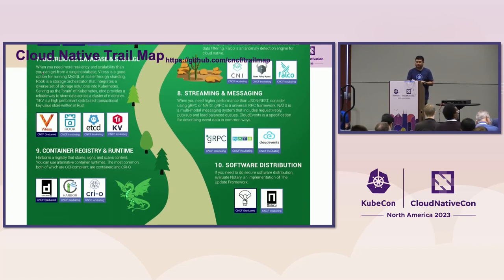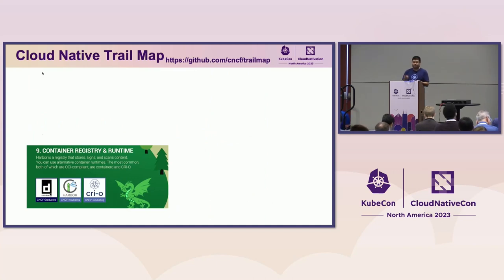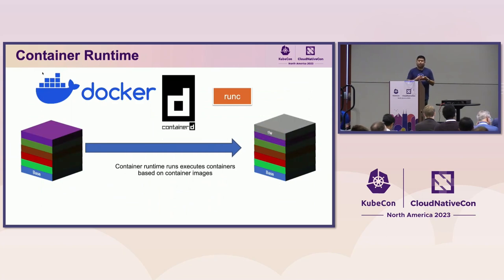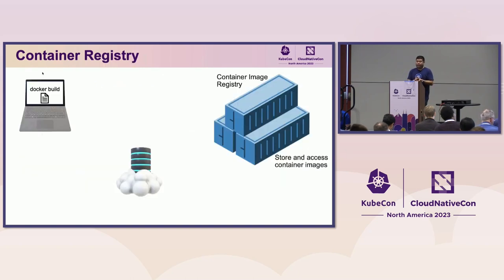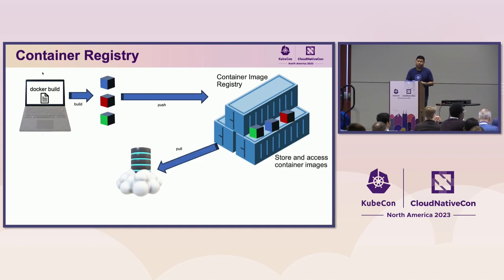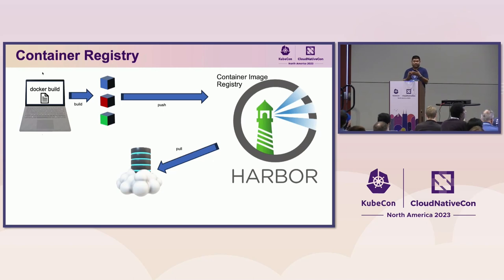Next: container registry and runtime. When we have a container, we use a runtime like ContainerD - under the covers of Docker is actually ContainerD and RunC - which takes the immutable, read-only layered image and adds a read-write layer on top. Once we have our container image, we need a place to host it: a registry. We build the image locally or via pipeline, push it to a container registry, and pull from it to run container instances. Harbor is the CNCF graduated project we'll use for the registry in our hands-on portion.